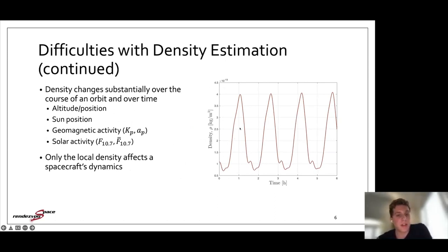Another difficulty is that the density changes substantially over the course of an orbit. Due to atmospheric heating from the sun, there's going to be a bulge in the atmosphere. So as we dip through that bulge, the density is going to increase periodically. And the density on any given day is a function of the geomagnetic activity and solar activity. So the density models are usually parameterized in terms of these indices that are published mostly daily, but some of them are published every three hours. And finally, only the local density affects the spacecraft's dynamics. So if we're using a single spacecraft in real time, we can at best estimate the local density. If we look at spacecraft data over a long period of time, we can develop better corrections to global density models. But in real time, it places a restriction on what we can estimate.